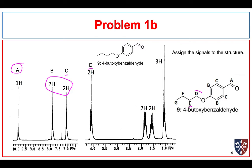Then we go on to E and F, both expected to be multiplets. There are potentially 4 protons on each side of E. If the coupling constants between E-D and E-F are approximately equal, we expect this to be a pentet, and that's what we see — 5 peaks. G we expect furthest upfield, to be a triplet integrating for three protons.